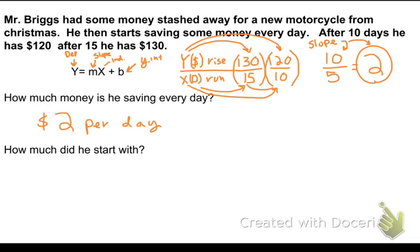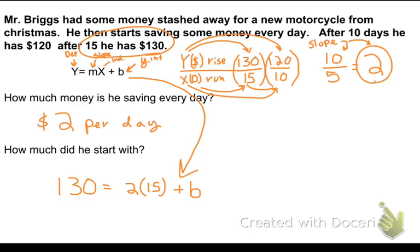So if I have two dollars per day, well then I go back to my original equation here. And I use one of my examples to solve in the other information. Well, I know, how about I try, I know that I had one hundred and thirty dollars after fifteen days. And I earned two dollars a day, and after fifteen days I had one hundred and thirty dollars, plus some unknown amount of money, B.